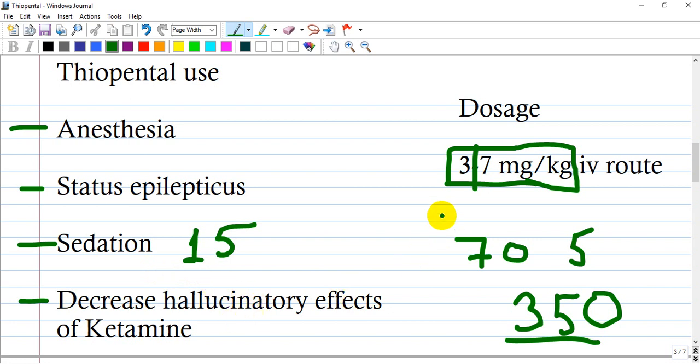The induction dose is 3 to 7 milligrams per kilogram. For example, if we use 5 mg/kg for a 70 kilogram patient, the induction dose would be 350 milligrams. The maintenance dose is about half of this or even less.